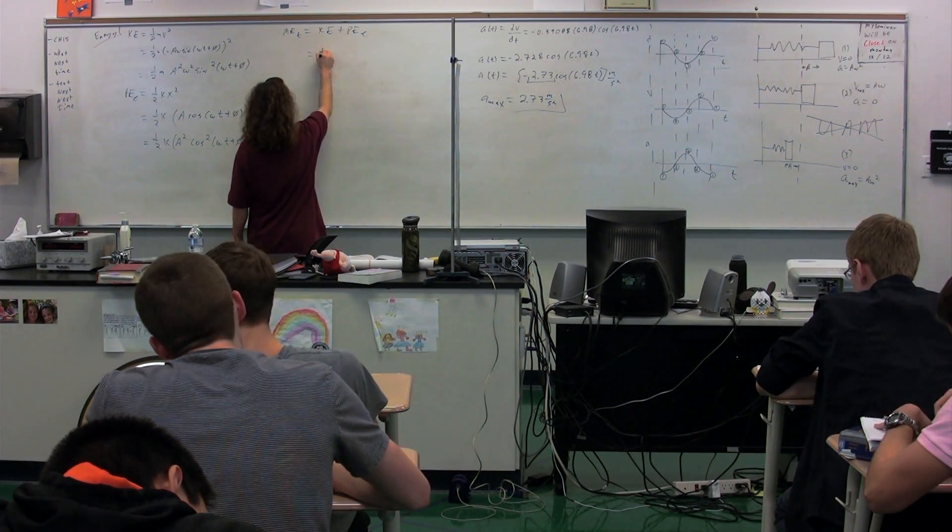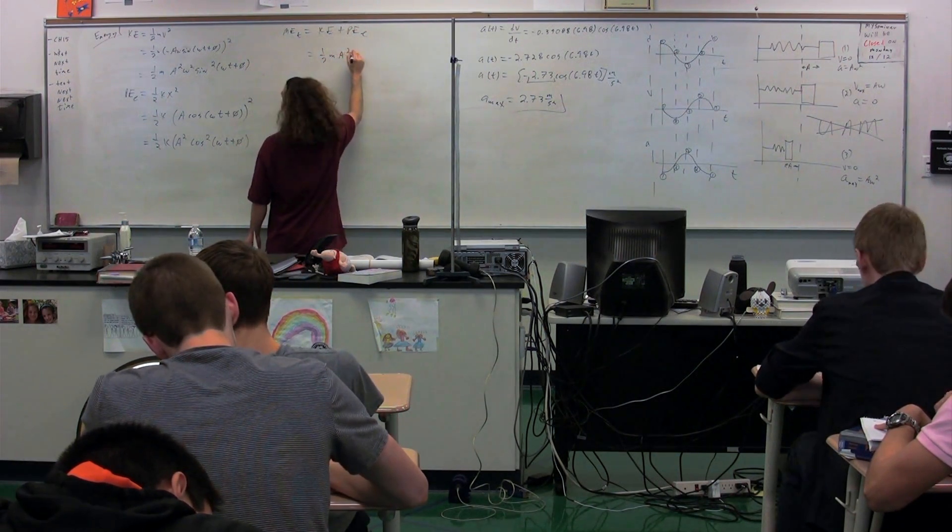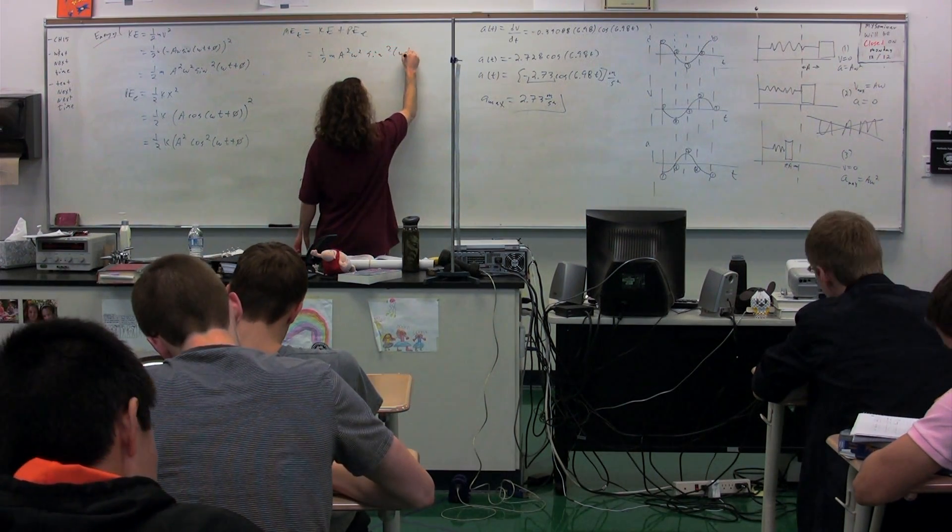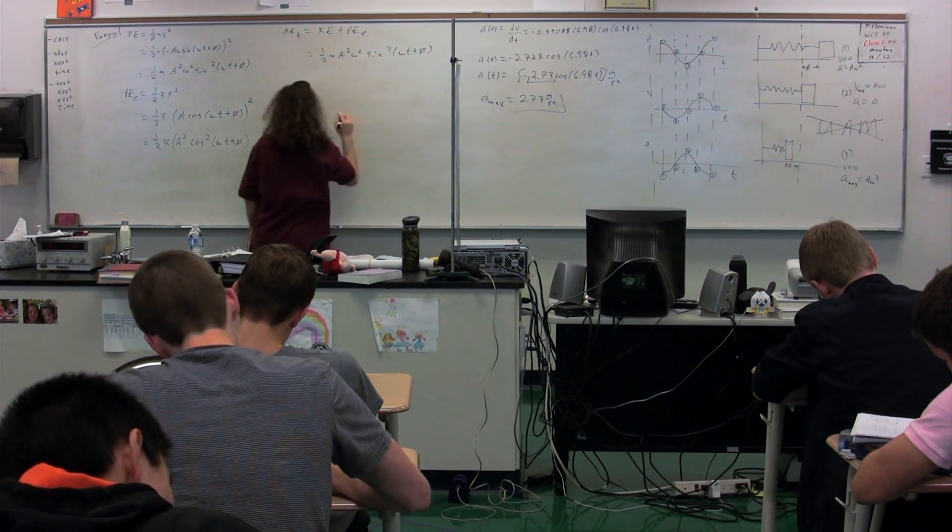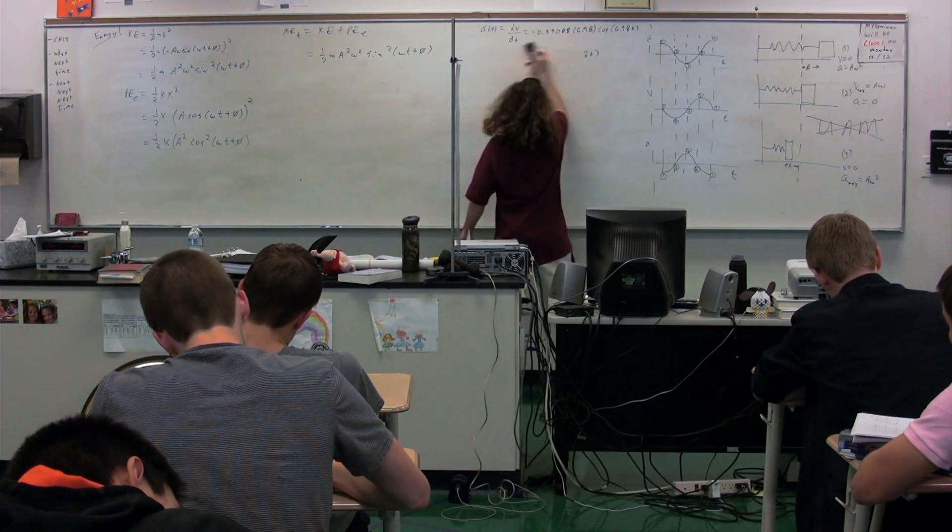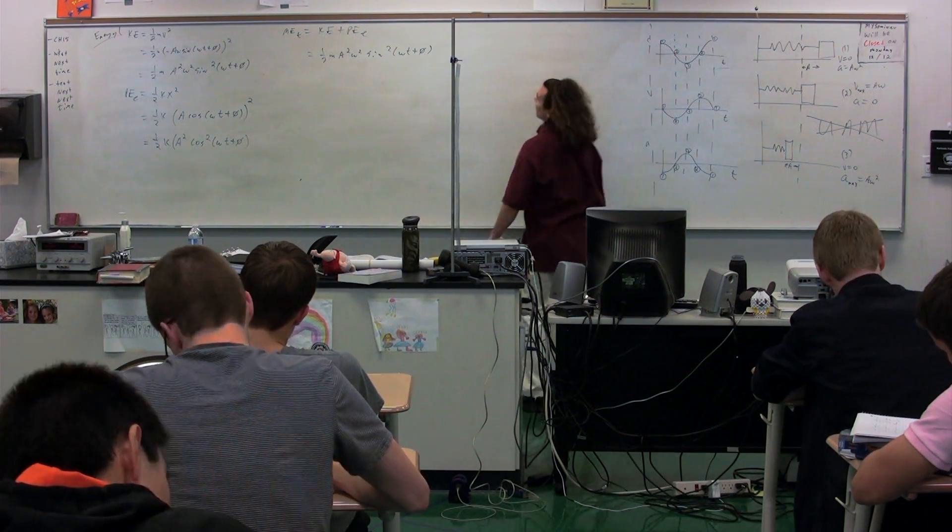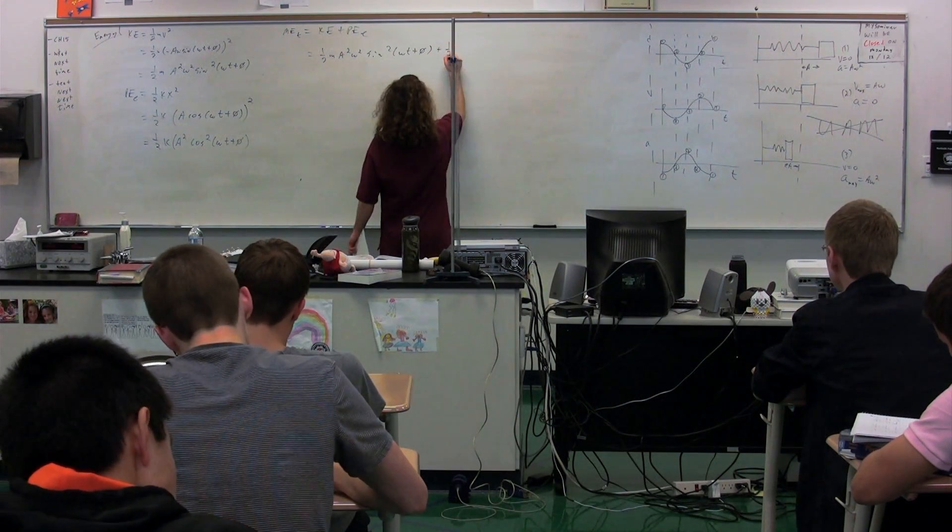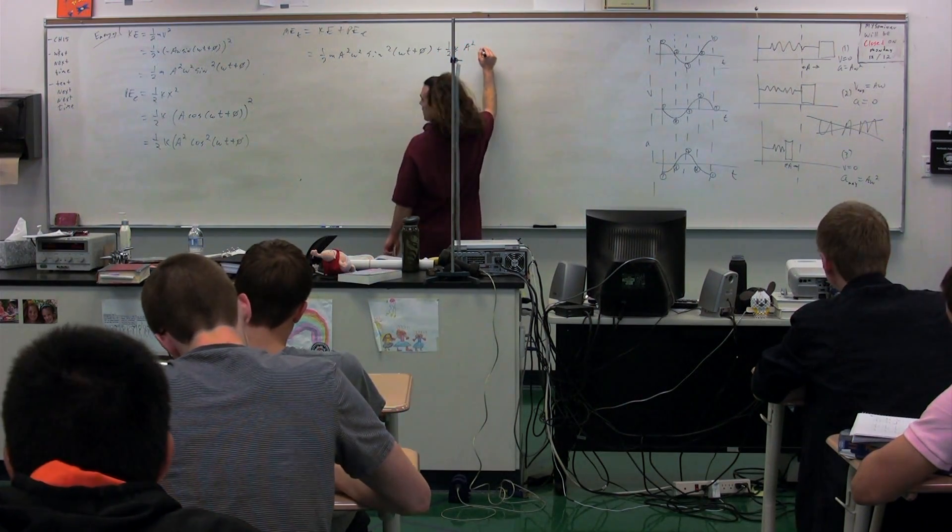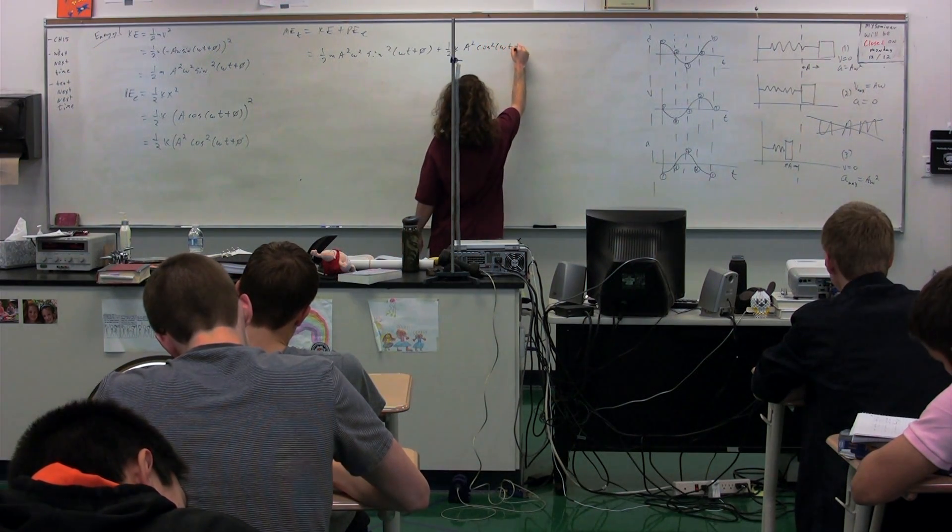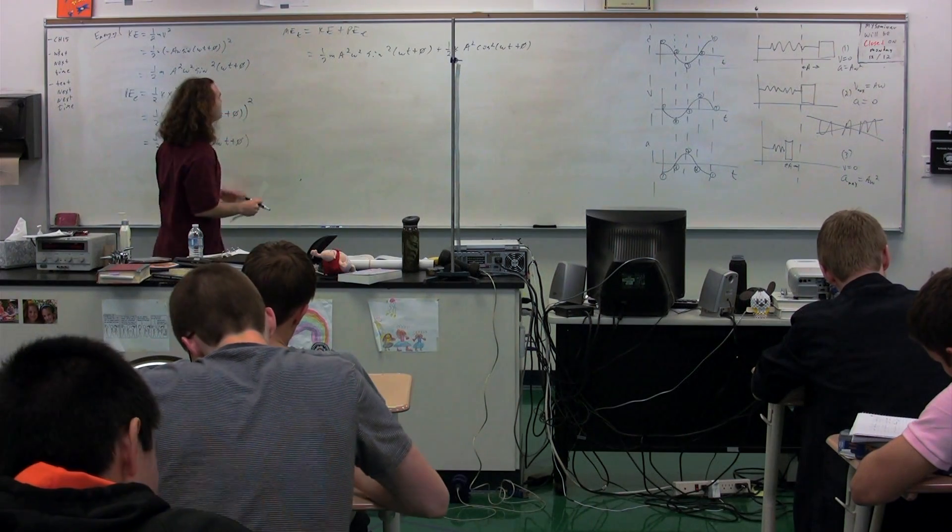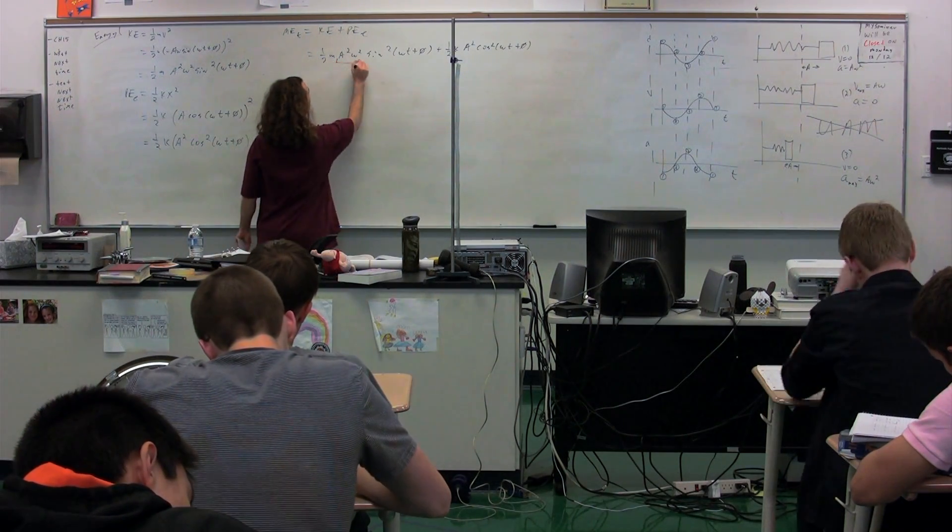Or, if you prefer, one-half m times A squared times omega squared times sine squared omega t plus phi. Now, this right here, if you recall, omega squared equals k over m.